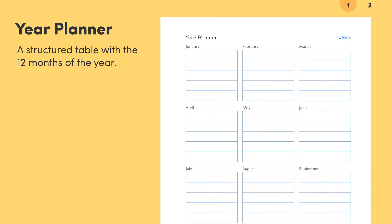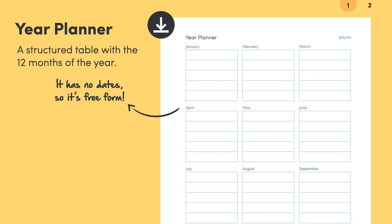The yearly planner is a structured table that includes all 12 months of the year. This planner is different from a normal calendar as it doesn't have the dates, so it's freeform. Feel free to pause this video to download our Atomy yearly planner template.